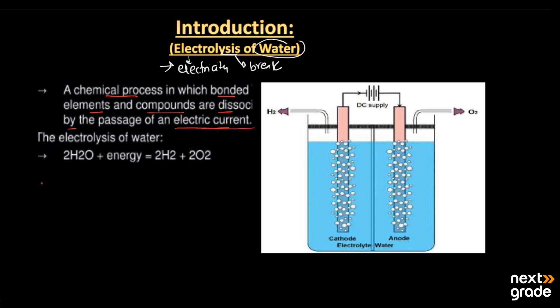When the electric current is passed through any type of compound or element, they are dissociated into their different forms. The electrolysis of water takes place as follows: the formula of water is H2O, and when energy is applied in the form of electricity, it dissociates into hydrogen gas and oxygen gas on both sides. Here we have a simple electrolytic cell used in this process.